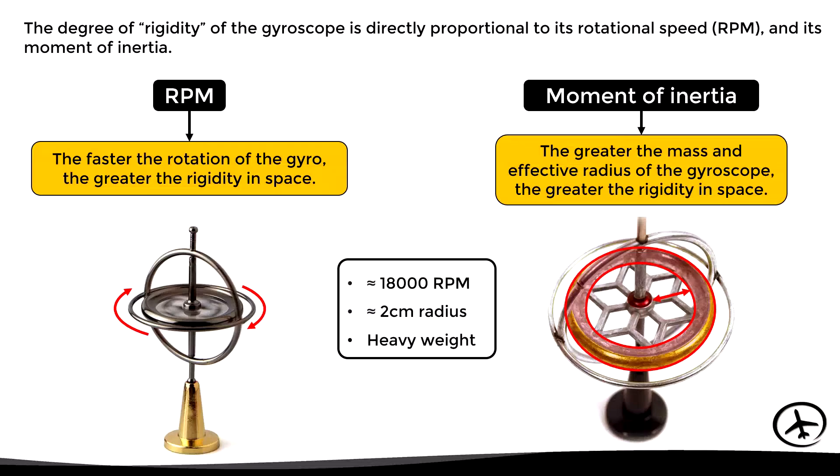In general terms, the gyroscopes installed in aircraft instruments spin at about 18,000 RPM, have an effective radius of about two centimeters, and are heavy. Therefore, we can expect this type of gyro to have a high rigidity in space. With that said, let's continue with the other gyroscopic effect: precession.